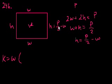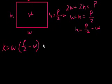Instead of writing an h there, let's write what we just figured out: p over 2 minus w. And then that equals pw over 2 minus w squared.